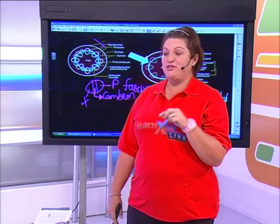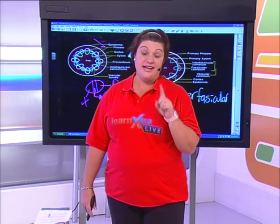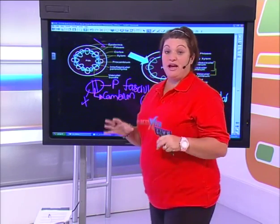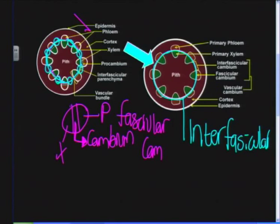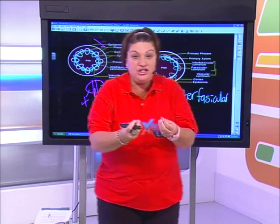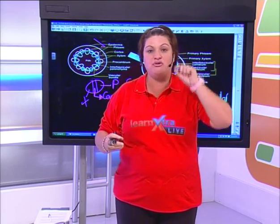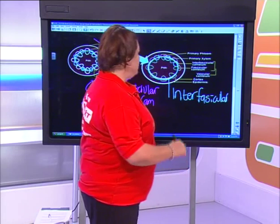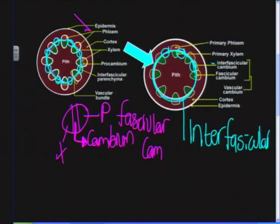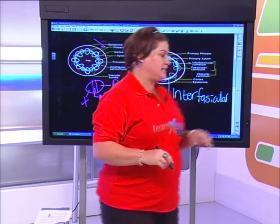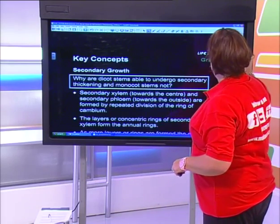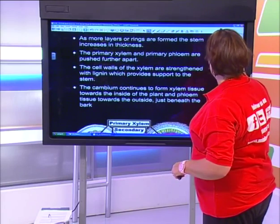One of the questions I noticed was about transpiration — and next week we're going to be looking at transpiration, so please tune in. Let's carry on with secondary thickening. Just to recap quickly: we need to have a ring of cambium so that we can make our characteristic rings. What happened in between each of the vascular bundles? Parenchyma changed — it became meristematic and joined up with the fascicular cambium on the side to form this continuous ring of cambium, called the vascular cambium within the stem.